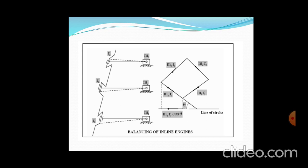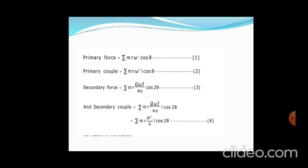The forces acting are primary and secondary. The primary force is the summation of mr·ω²·cosθ (Equation 1). The primary couple is mr·ω²·l·cosθ, where l is the length from the reference point. The secondary force is the summation of mr·(2ω)²/(4n)·cos2θ. The secondary couple is the summation of mr·(2ω)²/(4n)·l·cos2θ.